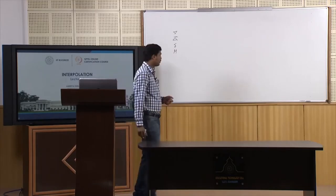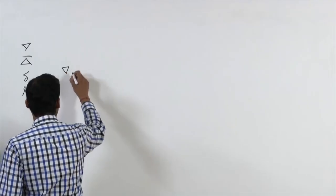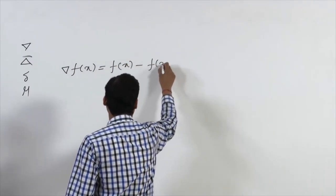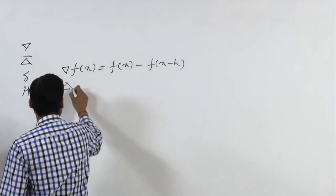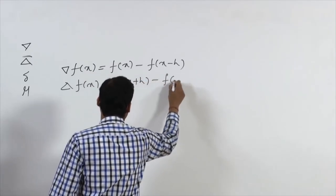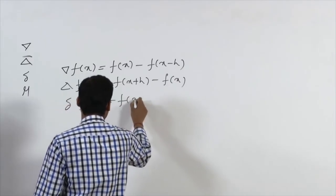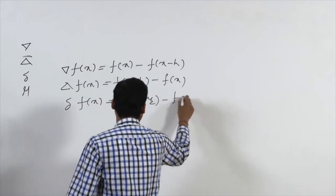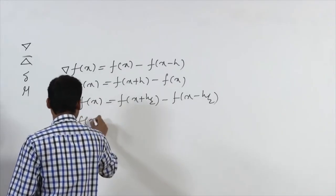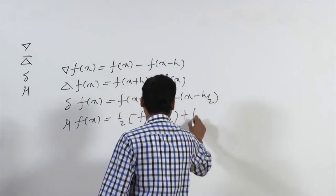The forward and backward difference operators discussed in the last lecture are expressed as: nabla of f = f(x) − f(x−h); delta of f = f(x+h) − f(x); the central difference operator δ of f = f(x+h/2) − f(x−h/2); and the average operator μ of f = (1/2)[f(x+h/2) + f(x−h/2)].